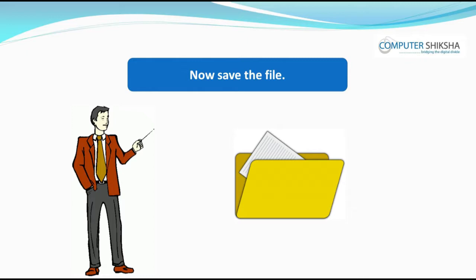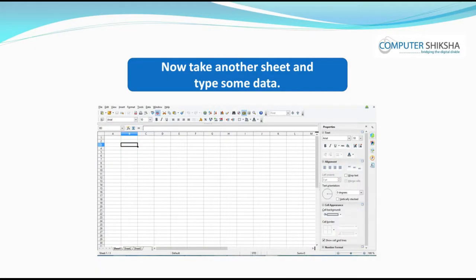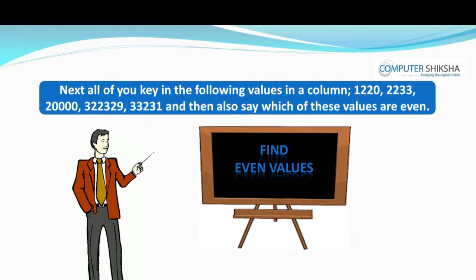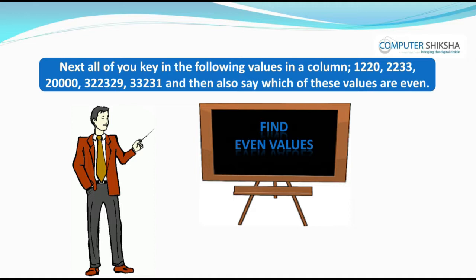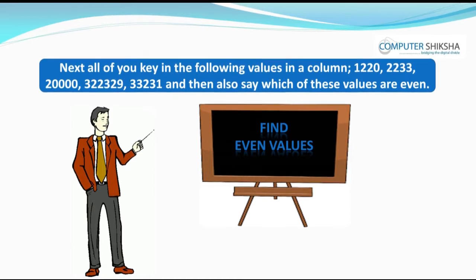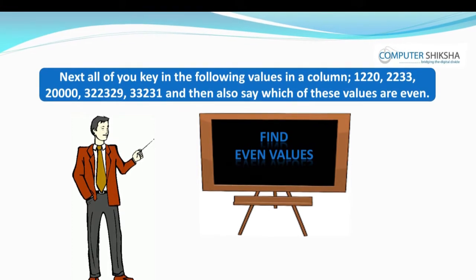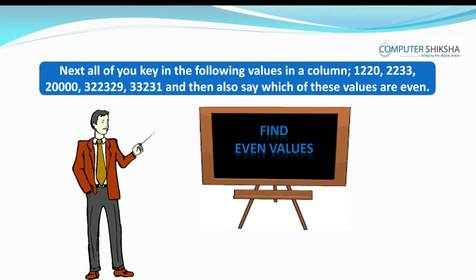Save this file, go to another sheet, and key in the following values in a column: 1220, 22332, 20000, 3232329, 33231. Then identify which of these values are even.